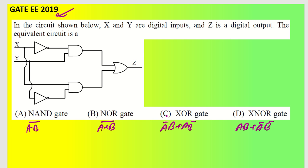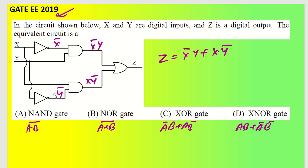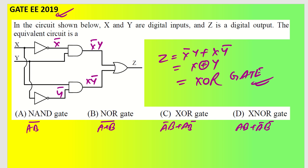Let us quickly write down the outputs at each gate. X goes through a NOT gate to become X̄, then through an AND gate with Y to give X̄Y. Similarly Y becomes Ȳ, then through AND with X to give XȲ. So Z = X̄Y + XȲ through an OR gate, which is exactly the XOR gate expression. So option C is correct.